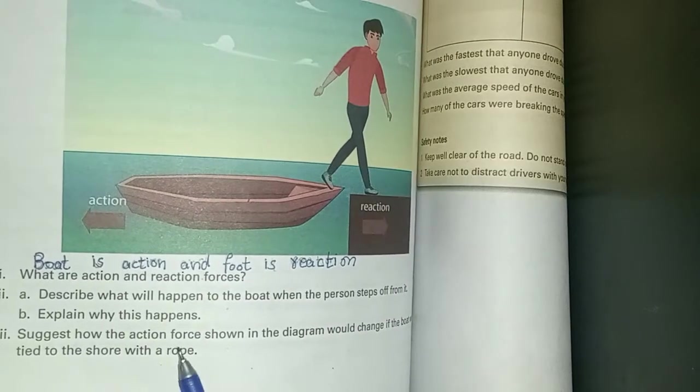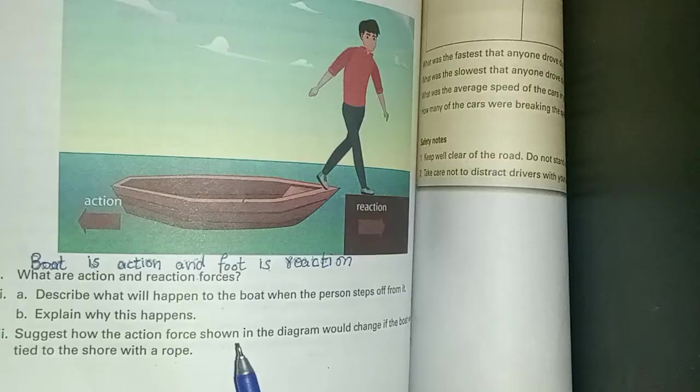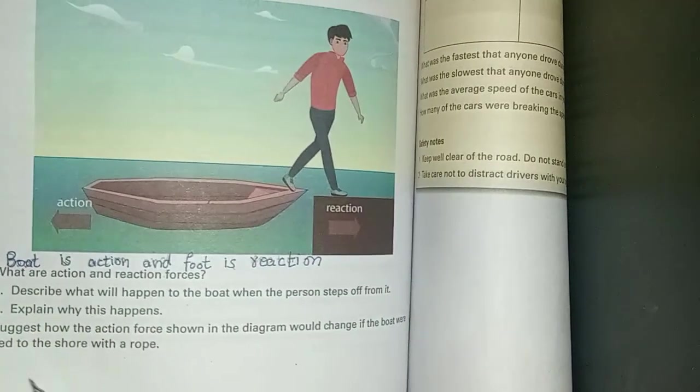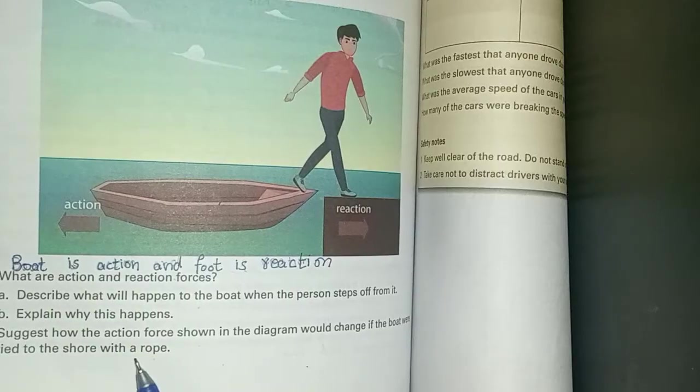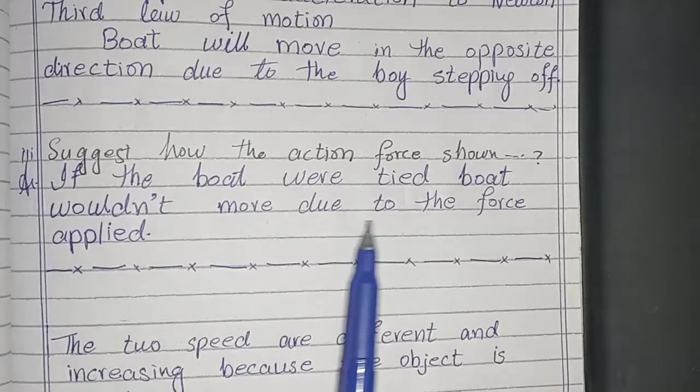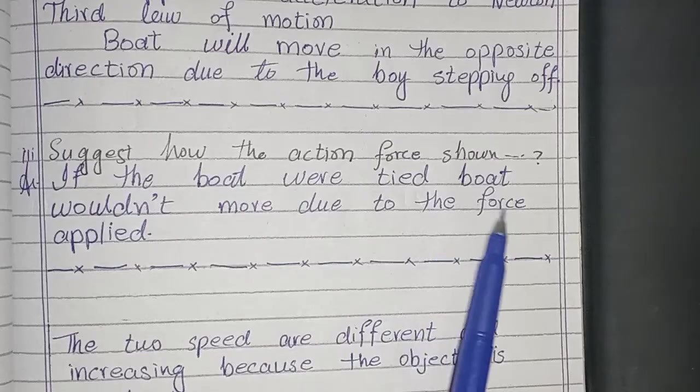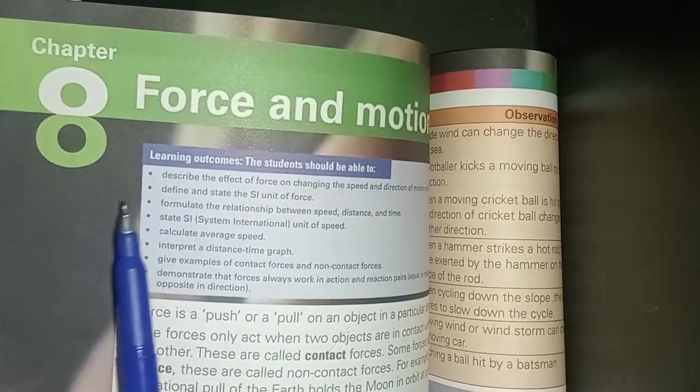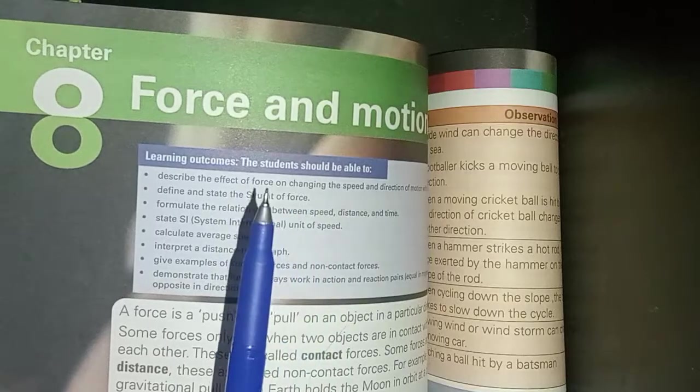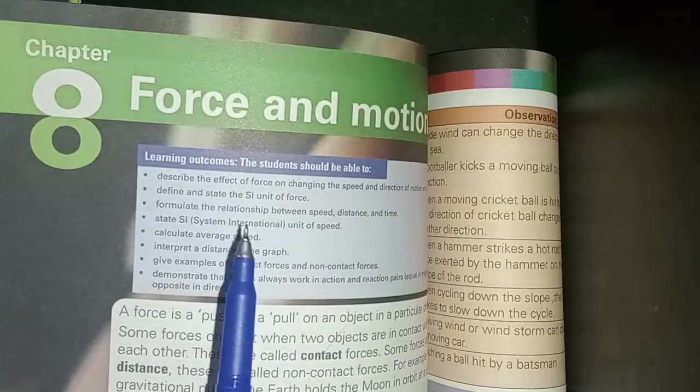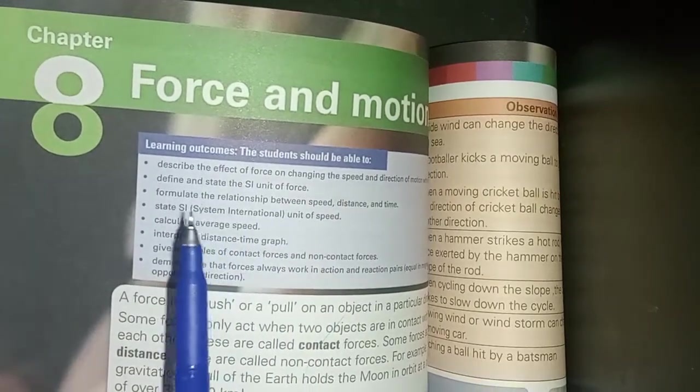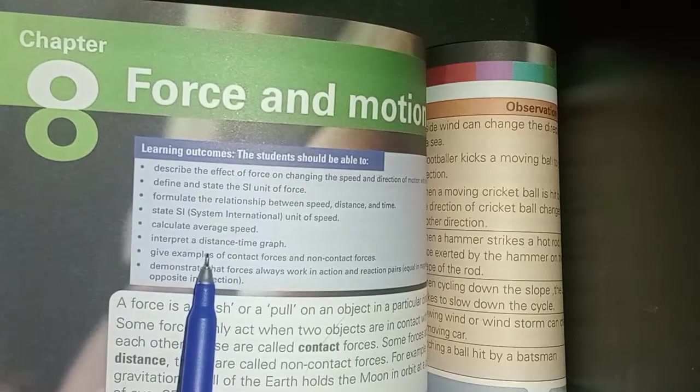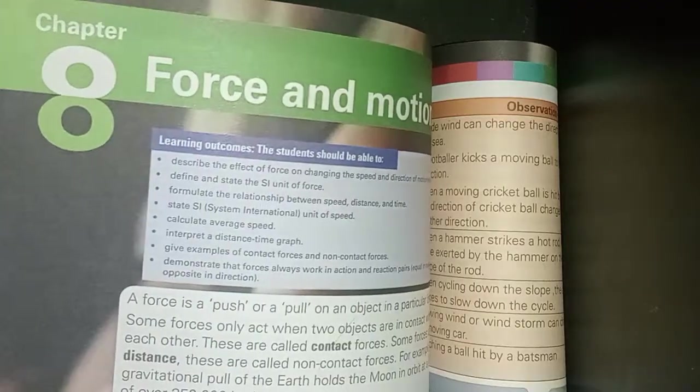Third question and last question: suggest how the action force shown in the diagram would change if the boat were tied to the shore with a rope. If the boat were tied, the boat wouldn't move due to the force applied. This video covers chapter number 8, Force and Motion, full exercise. In the first video of this chapter, test yourself was solved. We will see you in the next video.